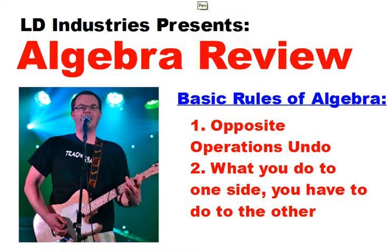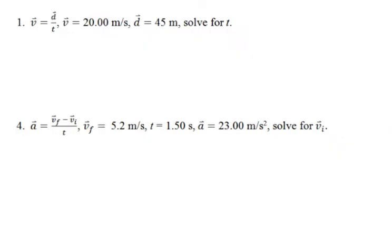A couple of things we're going to look at: basic rules of algebra - opposite operations undo, what you do to one side you've got to do to the other side as well. I want to go through some questions from a document I give my kids, Algebra Review. It's on the website www.ldindustries.ca. Let's try a couple of problems.